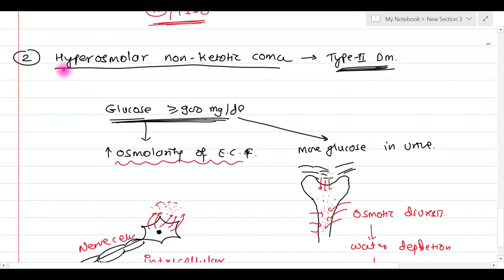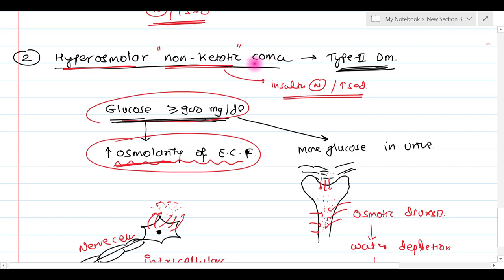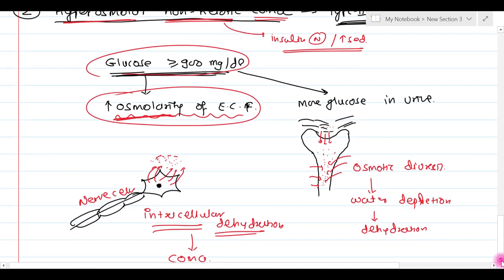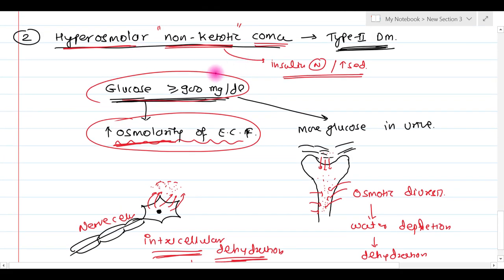The name explains the condition: it is hyperosmolar because of the very high osmolarity of the extracellular fluid due to high glucose concentration; it is non-ketotic because insulin is normal or increased, so there is no chance of ketone body development; and coma results from intracellular dehydration of neuronal cells. In the next video, we will discuss the chronic complications of diabetes mellitus. If you have any queries, please write them in the comment section below.